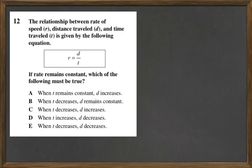The relationship between rate of speed R, distance traveled D, and time traveled T, is given by the following equation: R equals D over T. If rate remains constant, which of the following must be true?